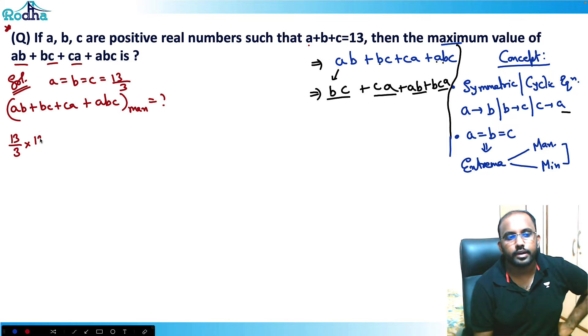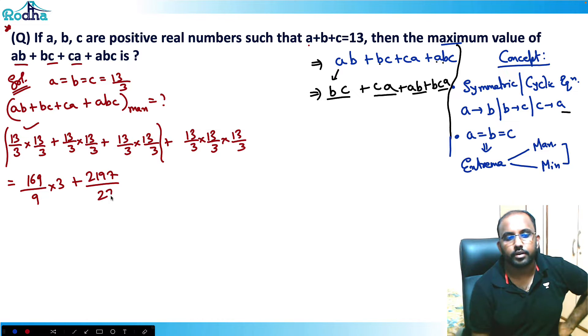I will be getting 13 by 3 into 13 by 3 plus 13 by 3 into 13 by 3 plus 13 by 3 into 13 by 3 plus abc, that is 13 by 3 into 13 by 3 into 13 by 3. Now if I solve it, I will be getting here 169 by 9, and this is into 3 times, so I can just make it into 3. Plus 13 cube is 2197 divided by 27.